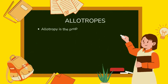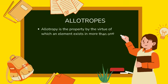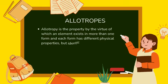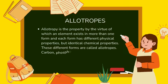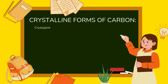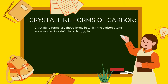Allotropy is the property by virtue of which an element exists in more than one form, where each form has different physical properties but identical chemical properties. These different forms are called allotropes. Carbon, phosphorus, and sulfur exhibit allotropy. Crystalline forms of carbon are those in which carbon atoms are arranged in a definite order, causing them to assume a definite shape and form crystals.